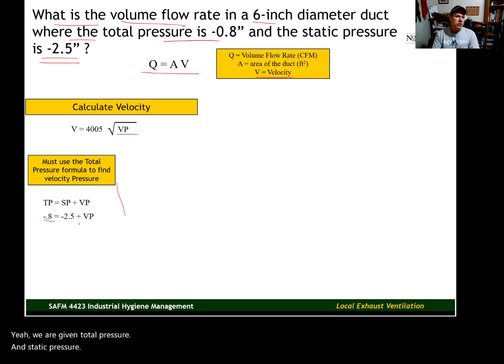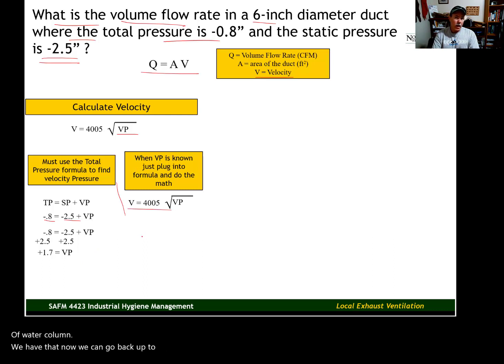Plug in our total pressure, plug in our static pressure, and solve for velocity pressure. We add 2.5 to each side. Our velocity pressure is 1.7 inches of water column. We have that. Now we can go back up to this formula and calculate our velocity.